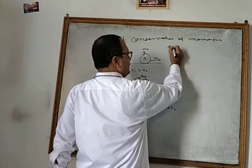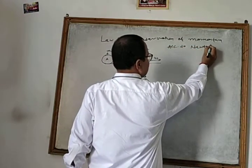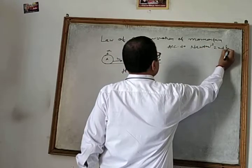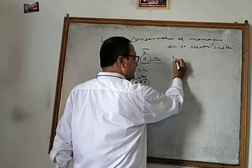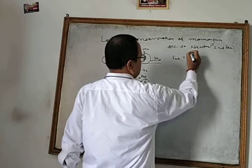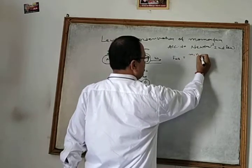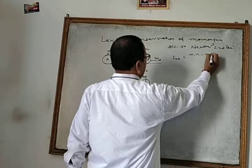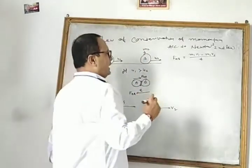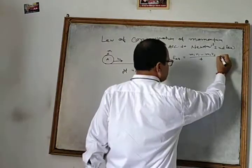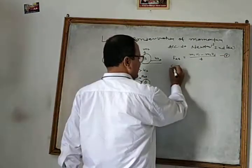According to Newton's second law: FAB = (M1V1 − M1U1) / T. Similarly, FBA = (M2V2 − M2U2) / T.